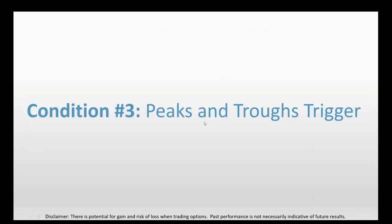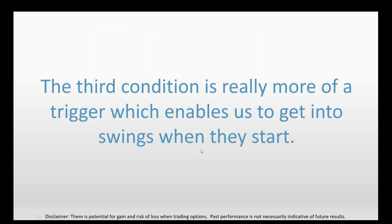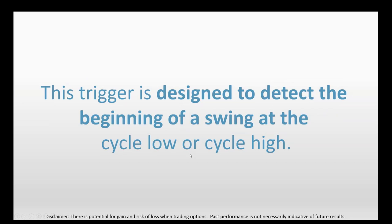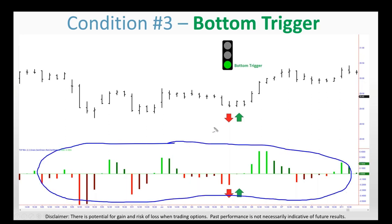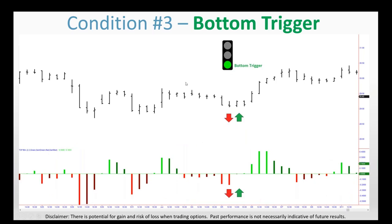Condition number three is the peaks and troughs trigger. This third condition is more of a trigger that enables us to get into swings as they start. The trigger is designed to detect the beginning of a swing at the cycle low or cycle high. Right at the cycle low before the up cycle starts, this indicator tells us there's a pretty good chance the cycle low is in place and that the upswing is about to start. When this triggers, it gives us the last green light for the traffic pattern strategy.